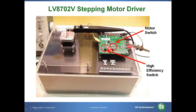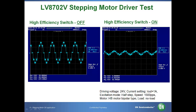We will demonstrate the LV8702V's features and benefits using a demo shown here. First, we turn on the motor switch. This switch activates the LV8702V motor driver IC to show its effectiveness. As the motor starts running, we measure the motor current using a waveform. Next, while keeping the motor driving, we turn on the high-efficiency switch. The graph on the left shows the motor driver's power consumption when the high-efficiency switch is turned off. The graph on the right shows when the high-efficiency switch is turned on. You can see the significant difference in the motor current level before and after the high-efficiency switch is turned on. The waveform became more flat, which indicates lower power consumption.